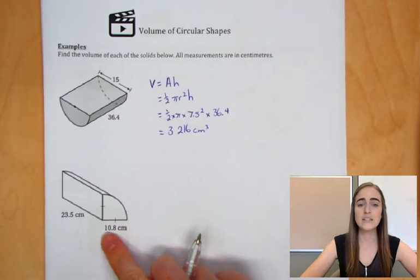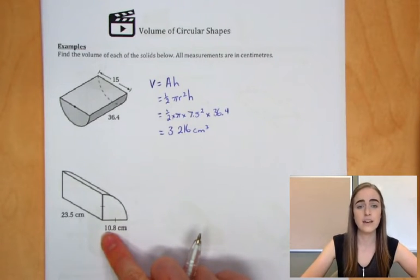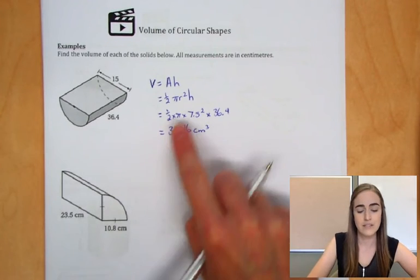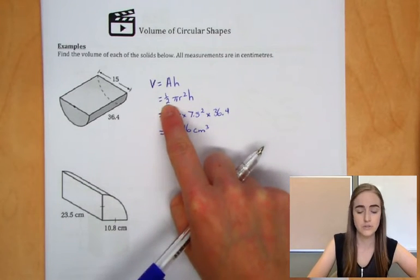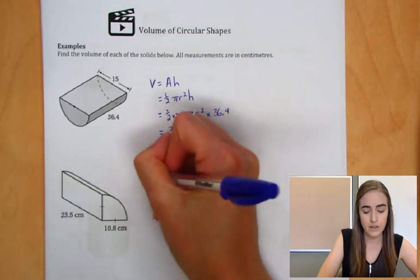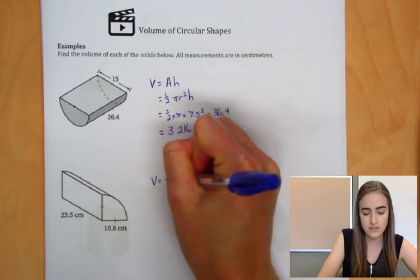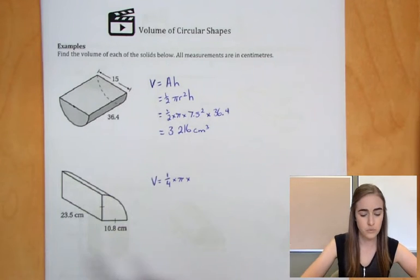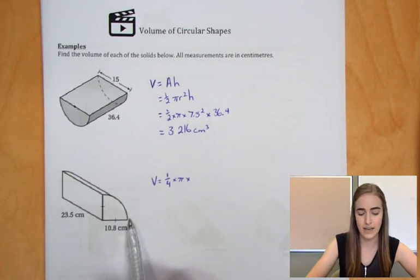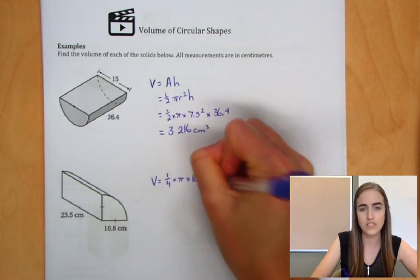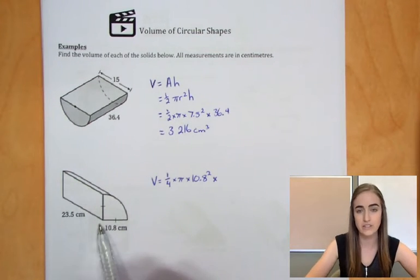If we have a look at the next one, it's going to be fairly similar how we figure this one out, but instead of half a circle this time, we're going to have a quarter. So that means instead of a half in the start of our formula, we're going to have one quarter. So the volume of this one would be one quarter times pi times the radius, which in this case is that 10.8 squared, and then times the height of that shape, which is that 23.5.